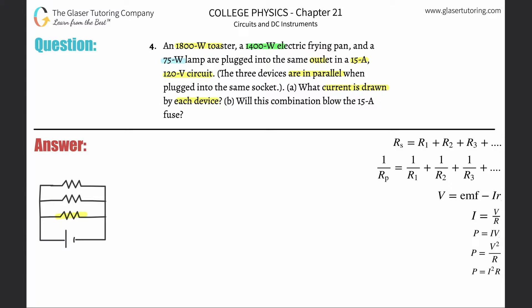Let's pretend this represents the 1800-watt toaster, this represents the 1400-watt electric frying pan, and this is the 75-watt lamp. What we know is the power being dissipated by each of these. I'll highlight this one in blue—that's 75 watts.